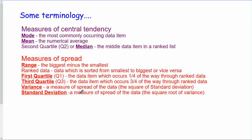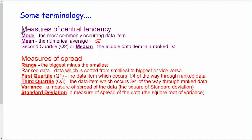Starting with some terminology you need to learn: the mode is the most commonly occurring data item — sometimes there might be two that occur the same number of times, so you list them both. The mean is the numerical average, and the symbol for the mean is x with a little bar over the top. The second quartile Q2 is called the median — that's the middle data item in a ranked list. All of these are what we call measures of central tendency.